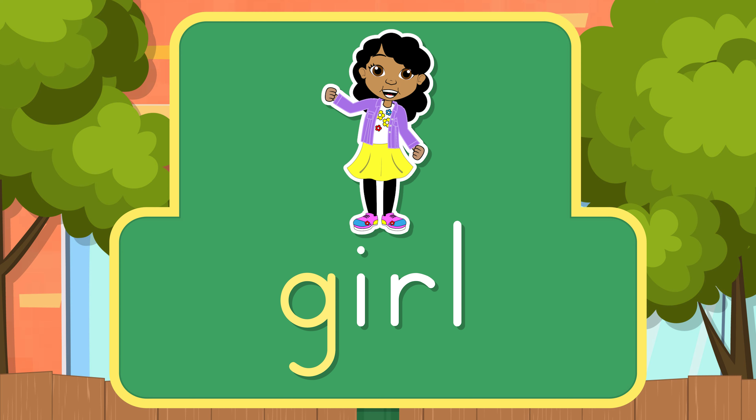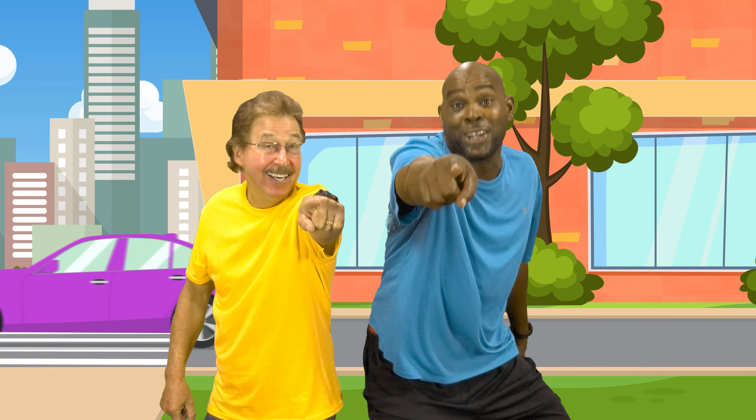Look and listen, and at the end say the letter sound and the word. Letter G says g, g, girl. G says g, g, girl.